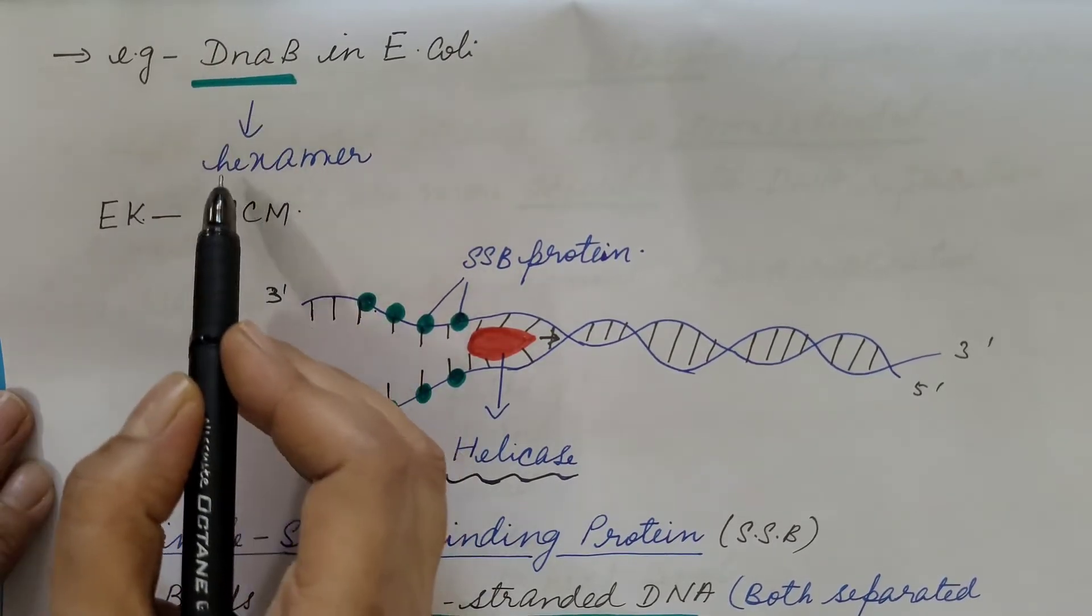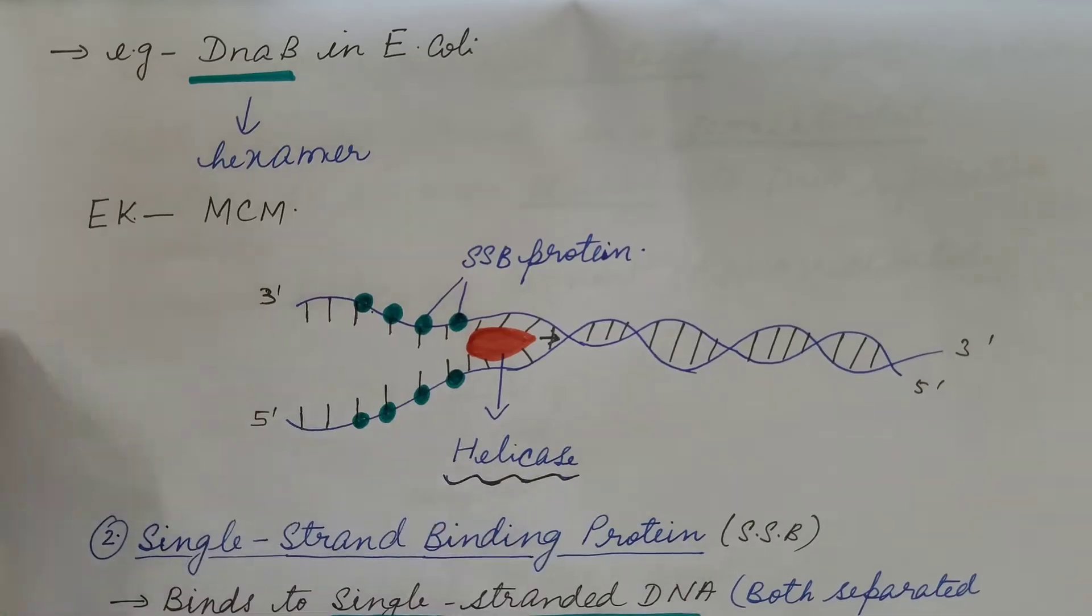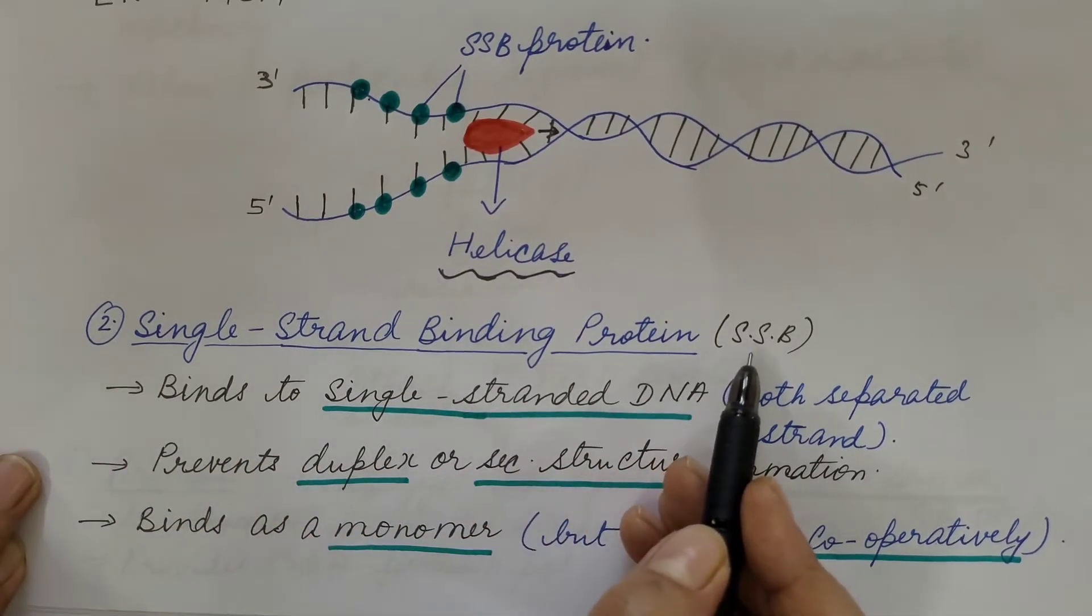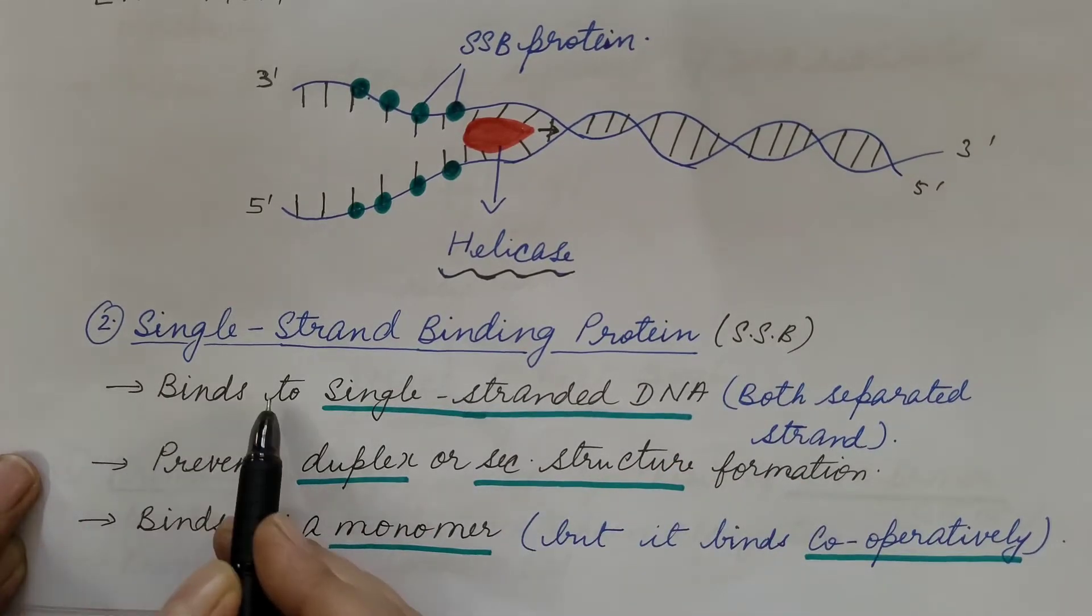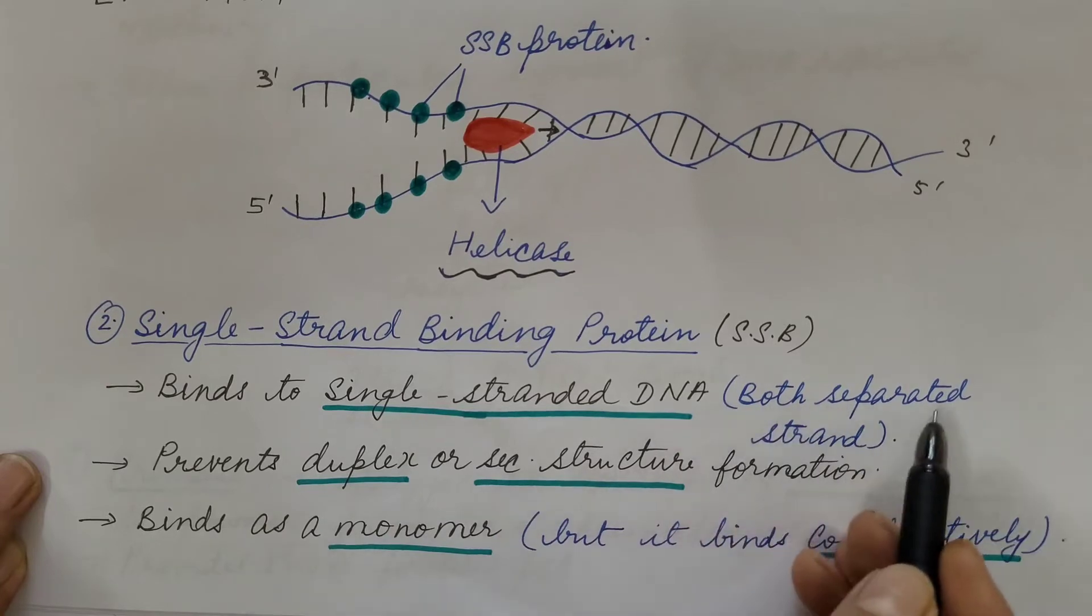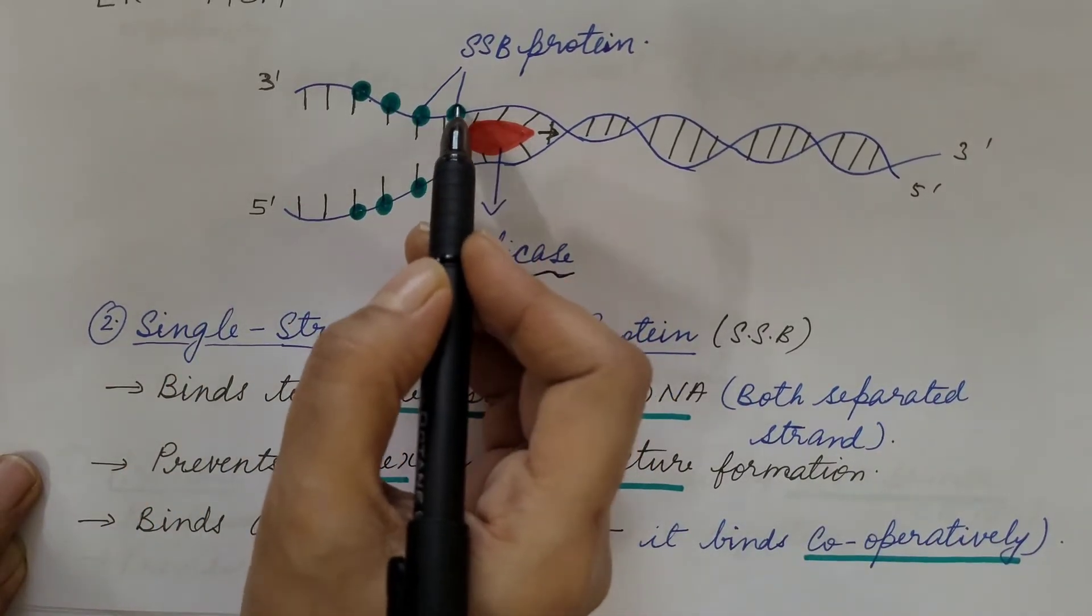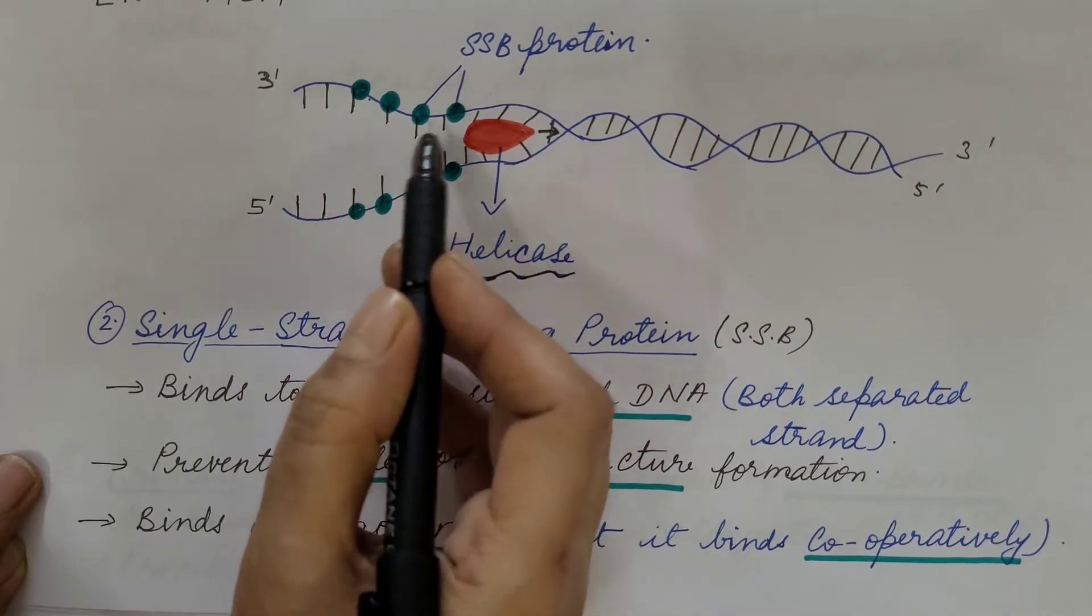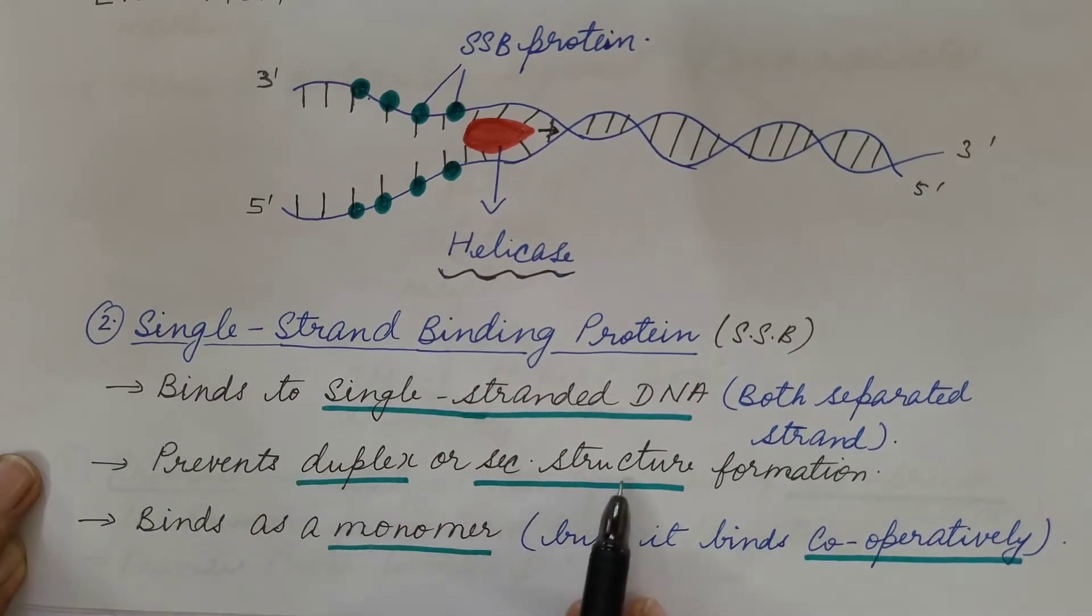Now the second is single strand binding protein, or SSB. It binds to single stranded DNA, that is both the separated strands. When both the strands separate, single strand binding protein comes and binds with the separated strands. This binding prevents duplex or secondary structure formation.